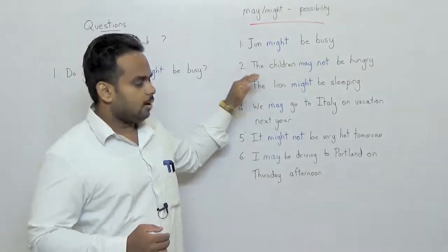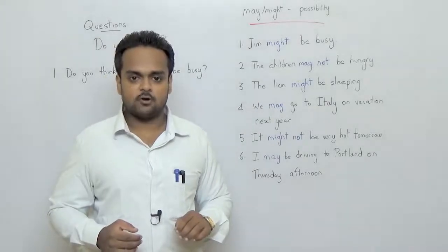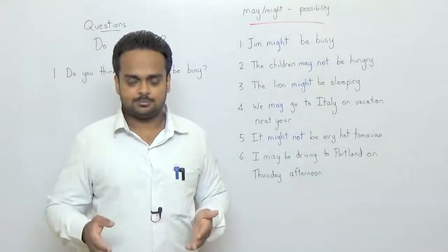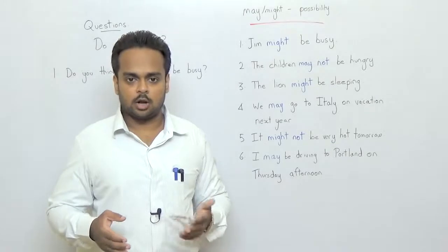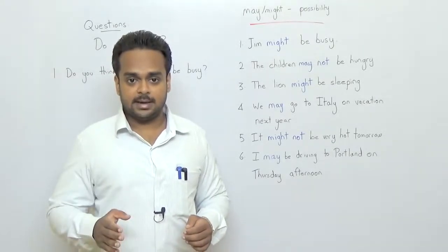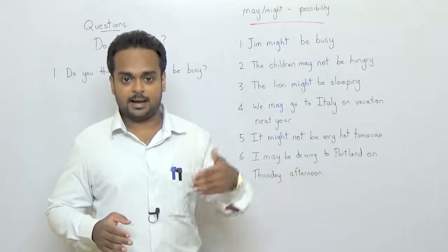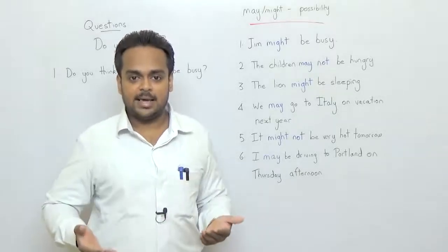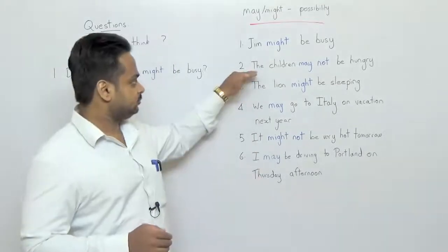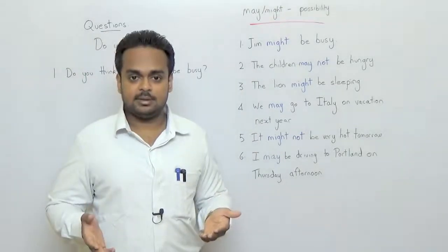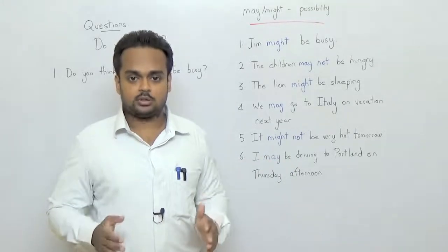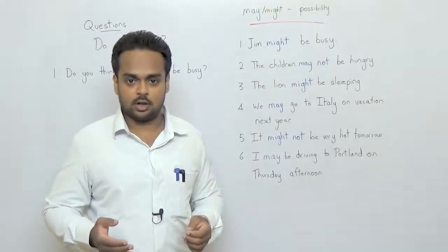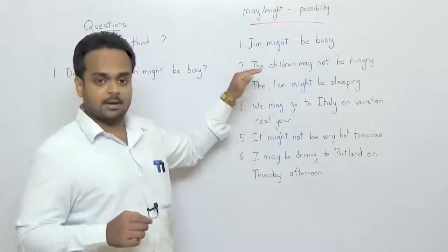The second one is the children may not be hungry. This is something I heard from my wife last weekend. On last Saturday, me, my wife and my kids had planned to go out for lunch at around one o'clock in the afternoon, but at 12:30 my kids were still outside playing. They had not come back into the house and I was getting really hungry so I said to my wife, hey why are they still outside playing? We need to go out for lunch. And my wife said the children may not be hungry. Maybe that's why they're still playing. Give them some more time and I think they will be hungry in about half an hour or so and then we can go for lunch. But right now the children may not be hungry.